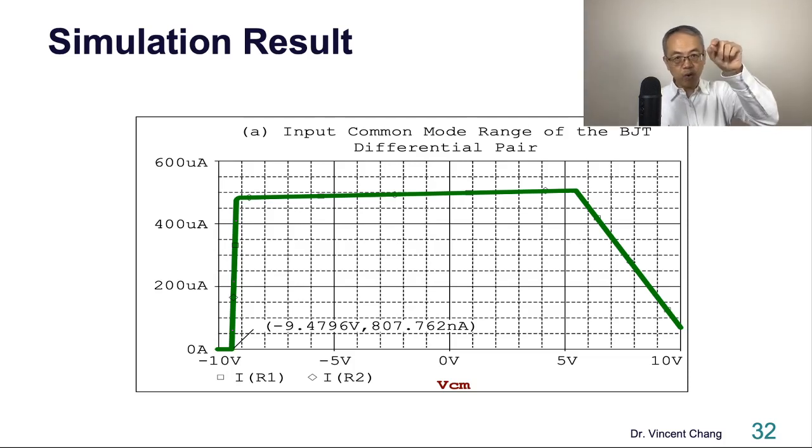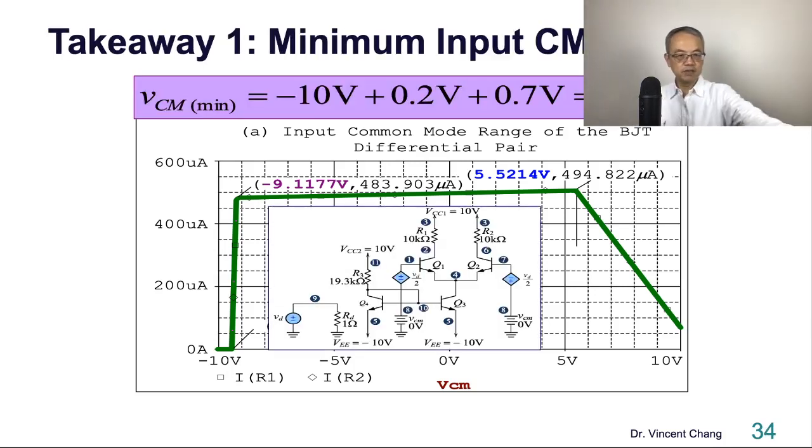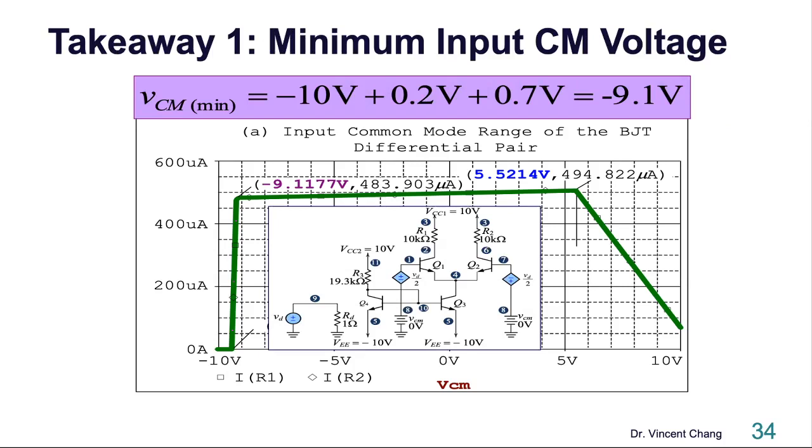So that's not magic. I'm trying to reconcile the hand analysis with the simulation result. So see the range. The first one, the lower limit, is negative 9.1. Correspond to the right, it really is negative 9.1177. So negative 9.1 is a very beautiful approximation. So when the current all of a sudden drops, it means the Q3, the current source transistor, is falling into saturation.